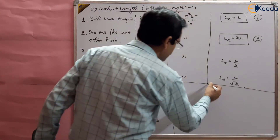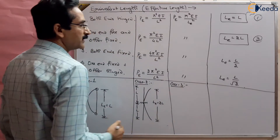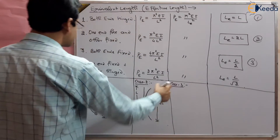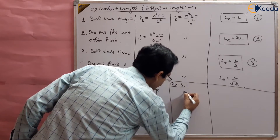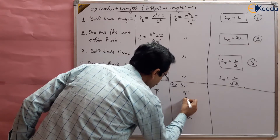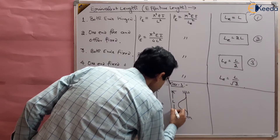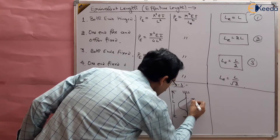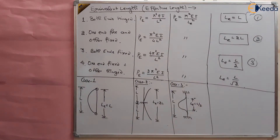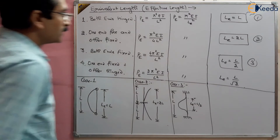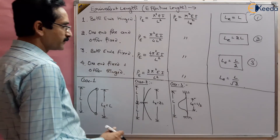Case 3: both ends fixed. The effective length is half of the actual length. Suppose the actual length of the column is L. After deformation, there is a curve, and the effective length — the portion between inflection points — is L/2. So the effective length is half the original length for both-ends-fixed.